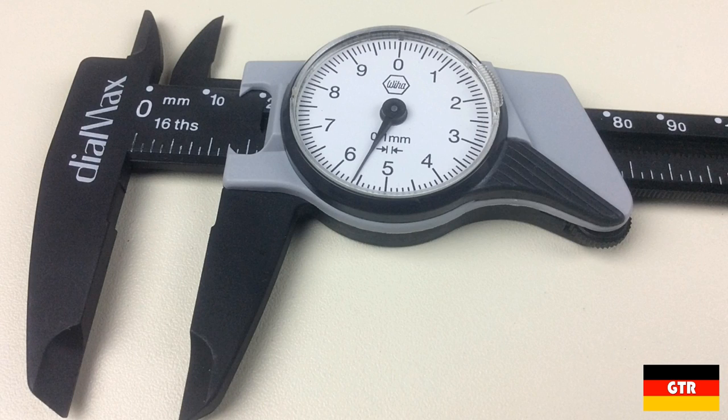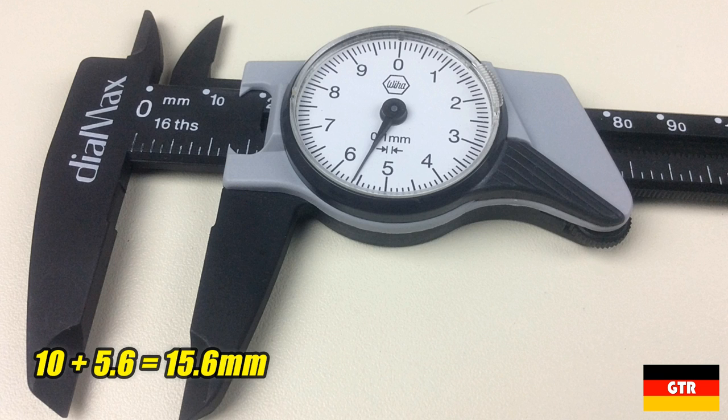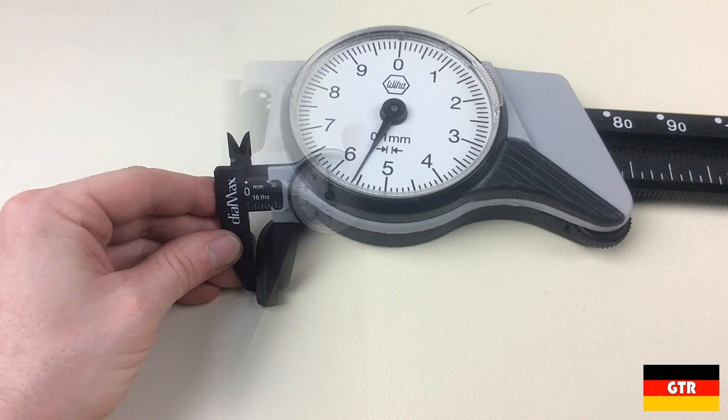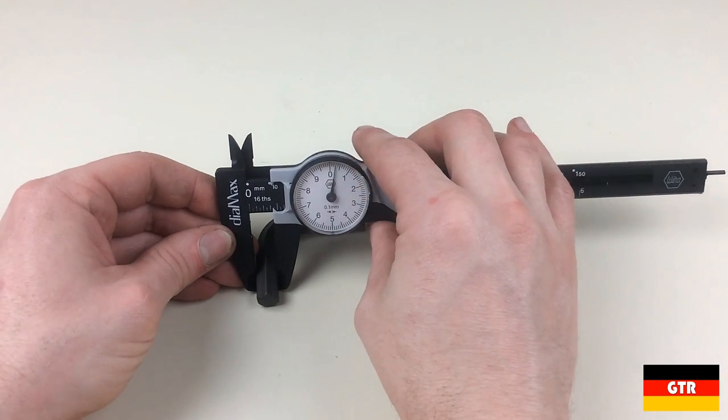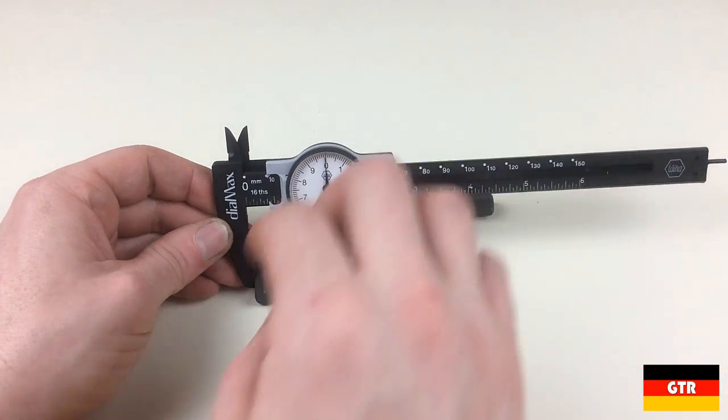The way to read this caliper is to first look at the last increment of 10 that the two pointers on the main scale have passed, then add the value of the dial to this increment to get the reading. One revolution of the dial is 10 millimeters of linear distance. Taking a couple of quick measurements using this hex L key, we can see that the 10 millimeter measurement is spot on.